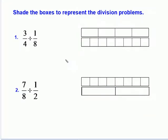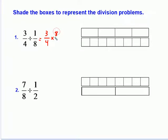Let's take a look at a few more problems as we try to understand what exactly the quotient is when we talk about division problems. Here we're given a division problem: three-fourths divided by one-eighth. If we do the same division of fraction problems, we remember keep, change, flip. We'll keep three-fourths, change that to a multiplication symbol, and then multiply by eight over one. That gives us twenty-four-fourths, or six.